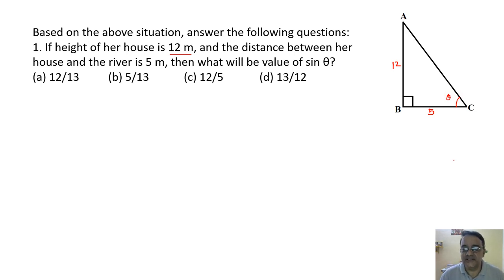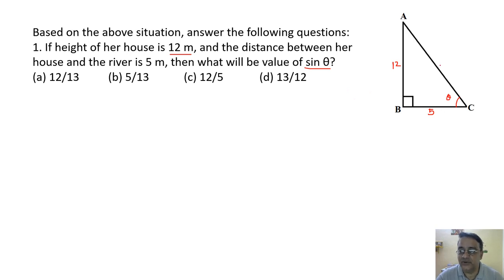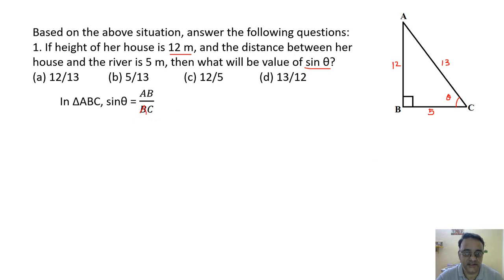Opposite and adjacent are given. Using Pythagoras: hypotenuse = √(12² + 5²) = √169 = 13. Then sin θ = AB/AC = 12/13. The correct option is option A.